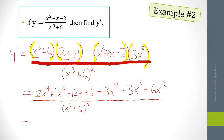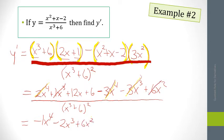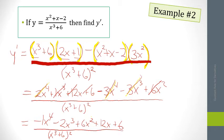Let's simplify: x³ times 2x gives 2x⁴, 1 times x³ gives x³, 6 times 2x gives 12x, 6 times 1 gives 6, then minus x² times 3x² gives -3x⁴, minus x times 3x³ gives -3x³, and minus 2 times 3x² gives +6x². Combining like terms: 2x⁴ and -3x⁴ give -x⁴; x³ and -3x³ give -2x³; then +6x², +12x, +6, all over (x³ + 6) squared.